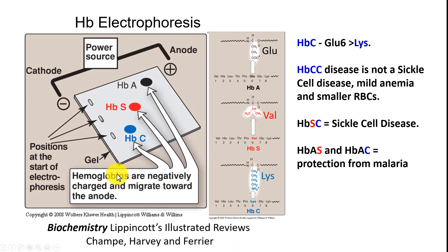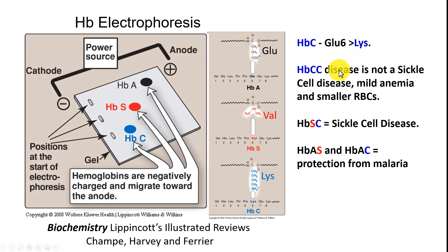You can do electrophoresis in gels. HBA with glutamic acid migrates toward the positive anode much faster than S or C. S has a valine — one less negative charge — and C has a lysine — two less negative charges — so it doesn't migrate quite as fast. HBC has lysine at position 6 and causes a mild anemia with smaller red blood cells, not a sickle cell disease. HBSC is a sickle cell disease, and both HBAS and HBAC protect from malaria.